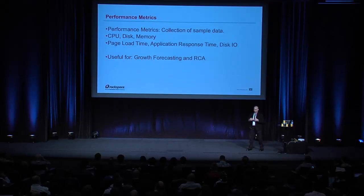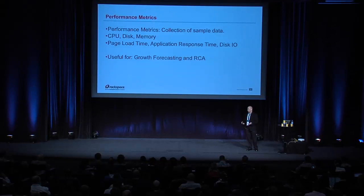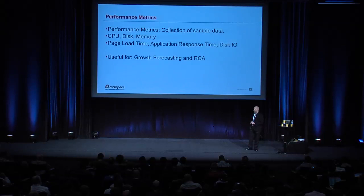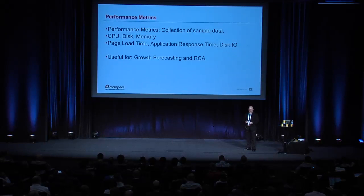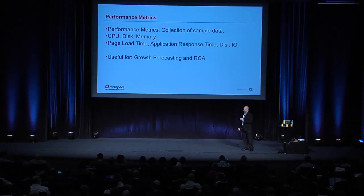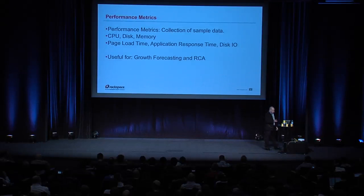CPU, disk, and memory — everyone's familiar with those. But there's a lot more you can do with performance metrics. Some really useful ones at the platform level are page load time and application response time, and at the system level, disk I/O. For most people with a content delivery system, page load time is one of the most important metrics. The abandonment rate for web pages goes up exponentially as page load time increases beyond one second, and this is something every major site tracks and attempts to drive down as low as possible.